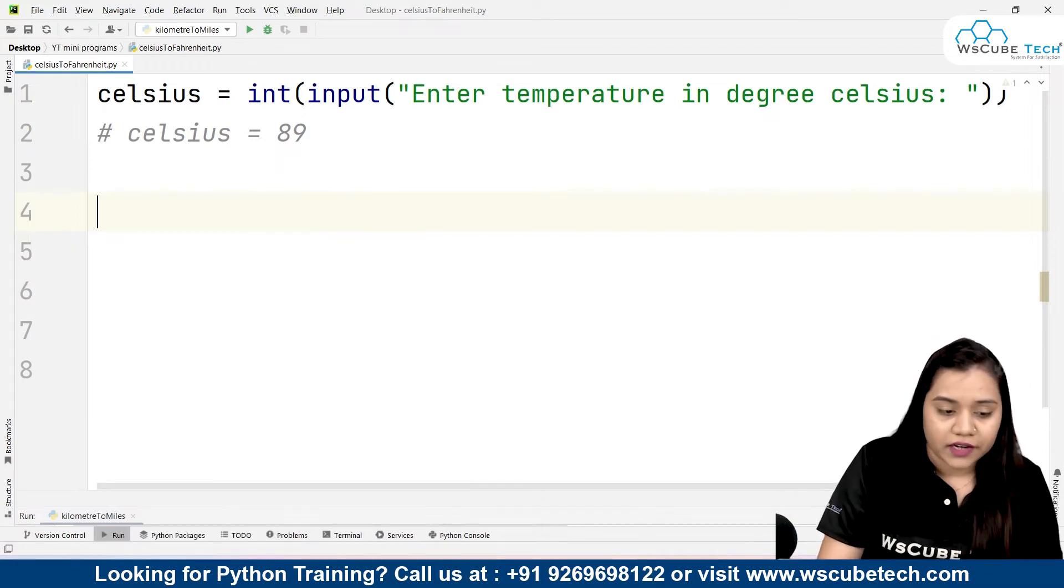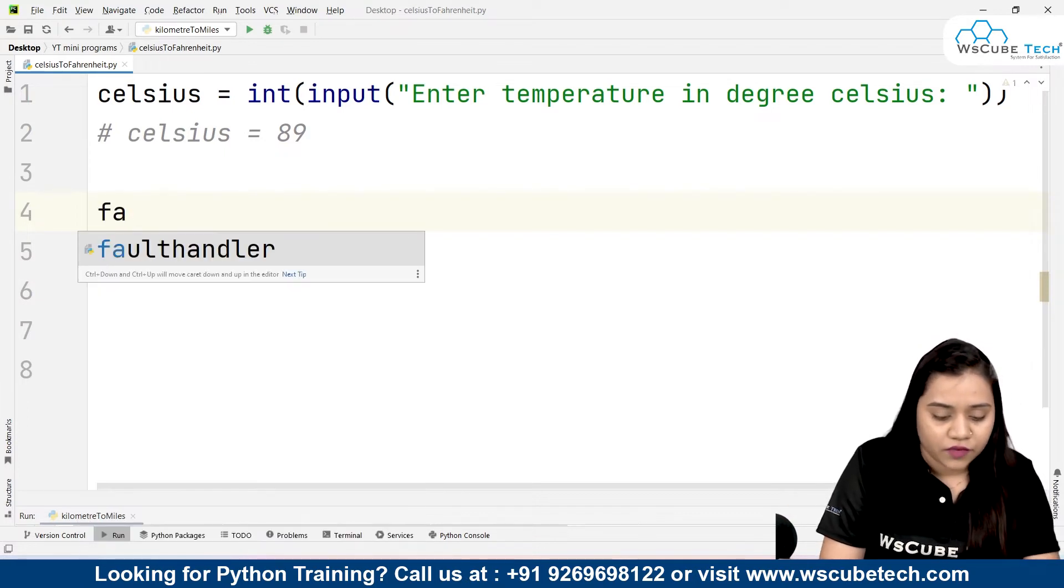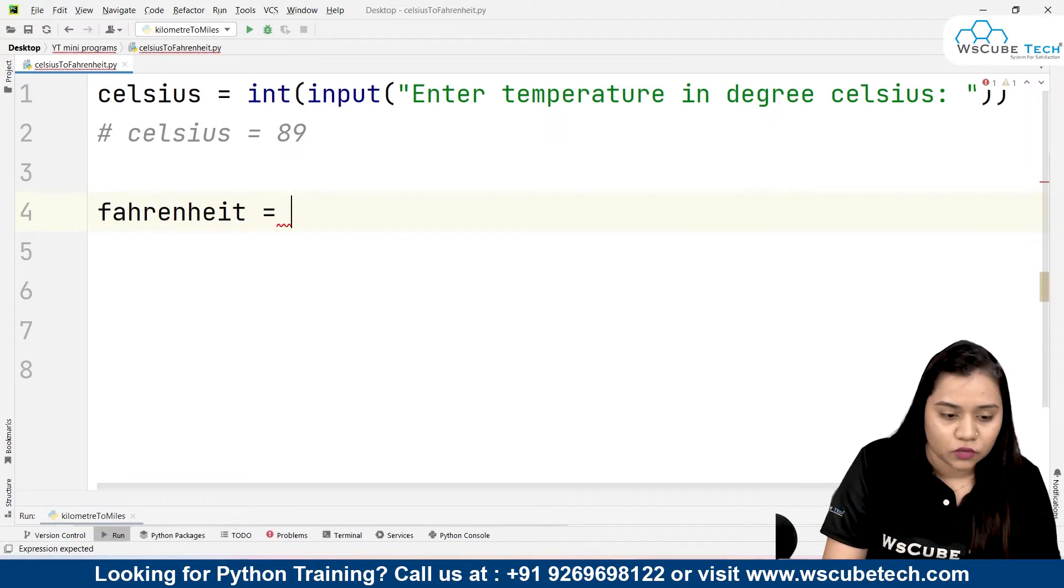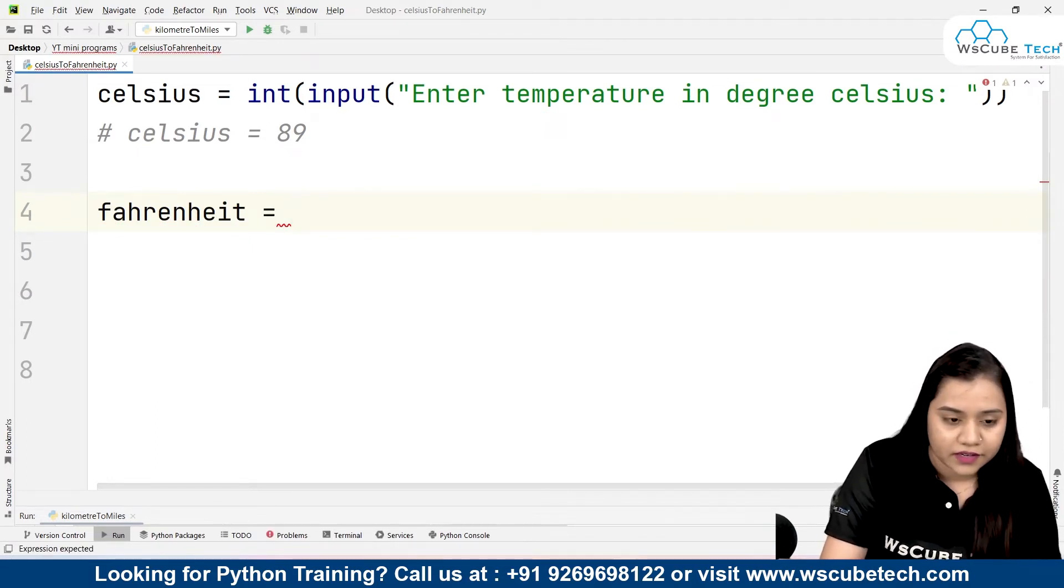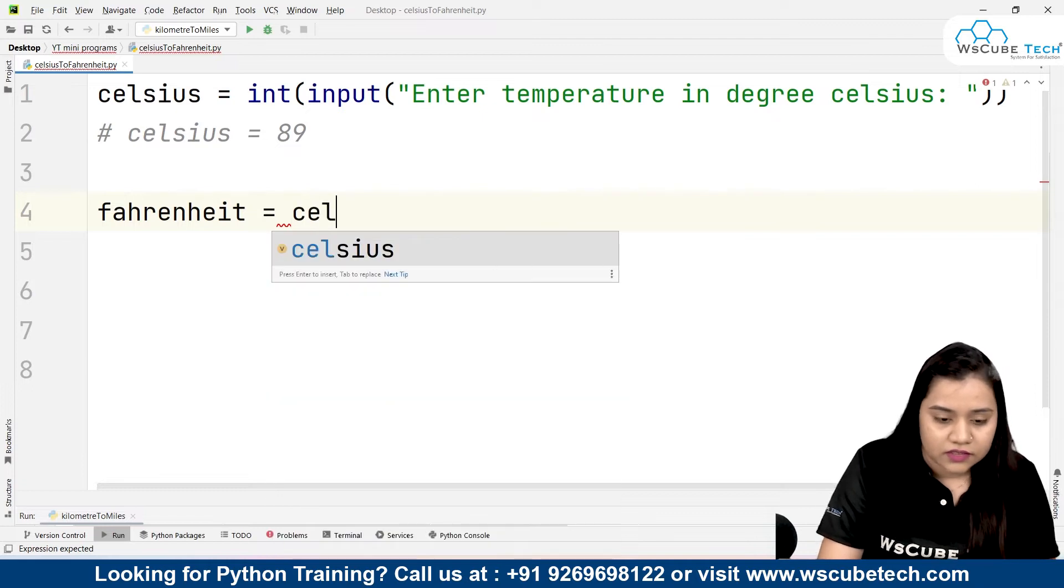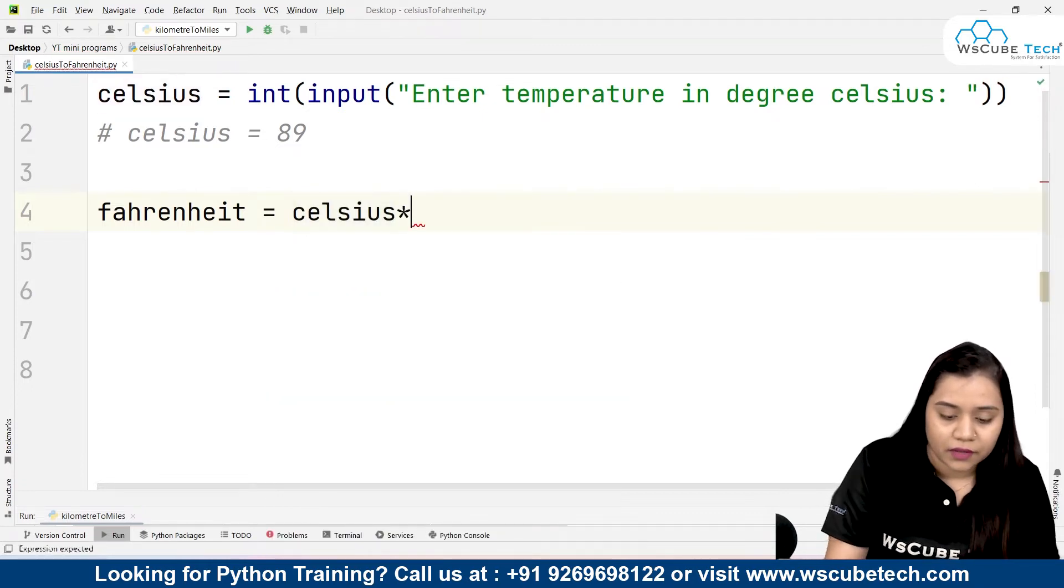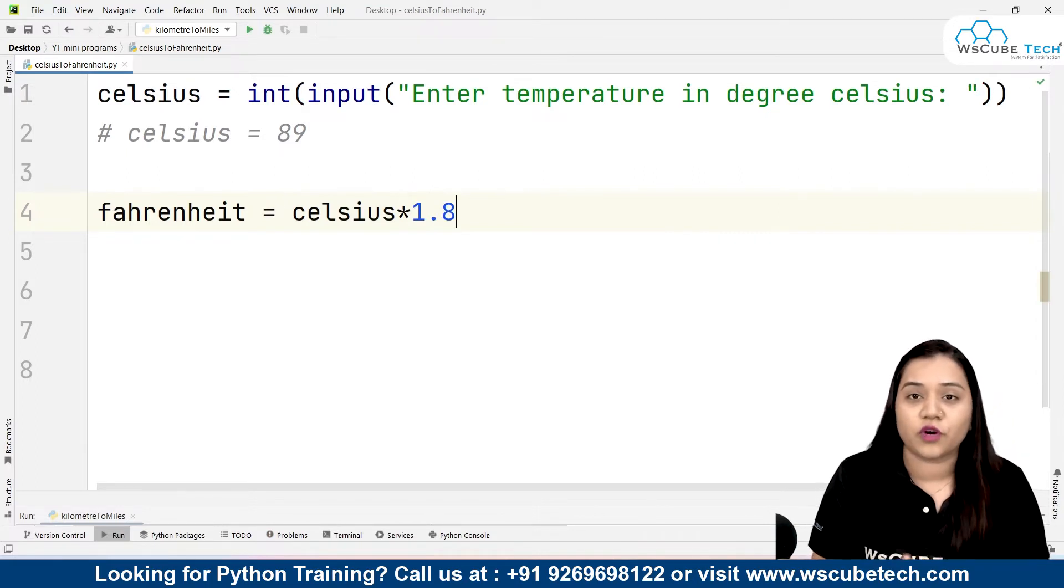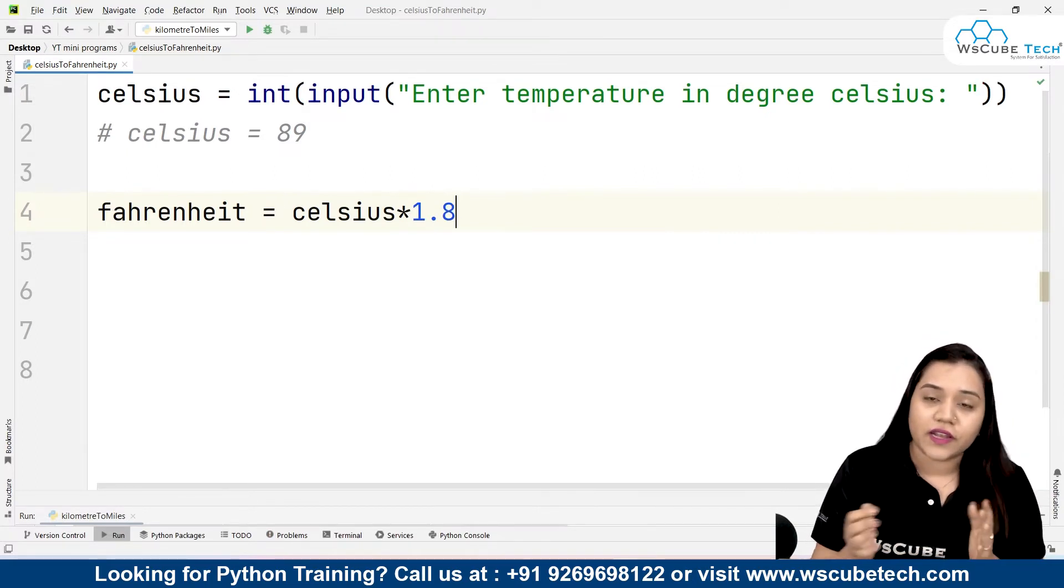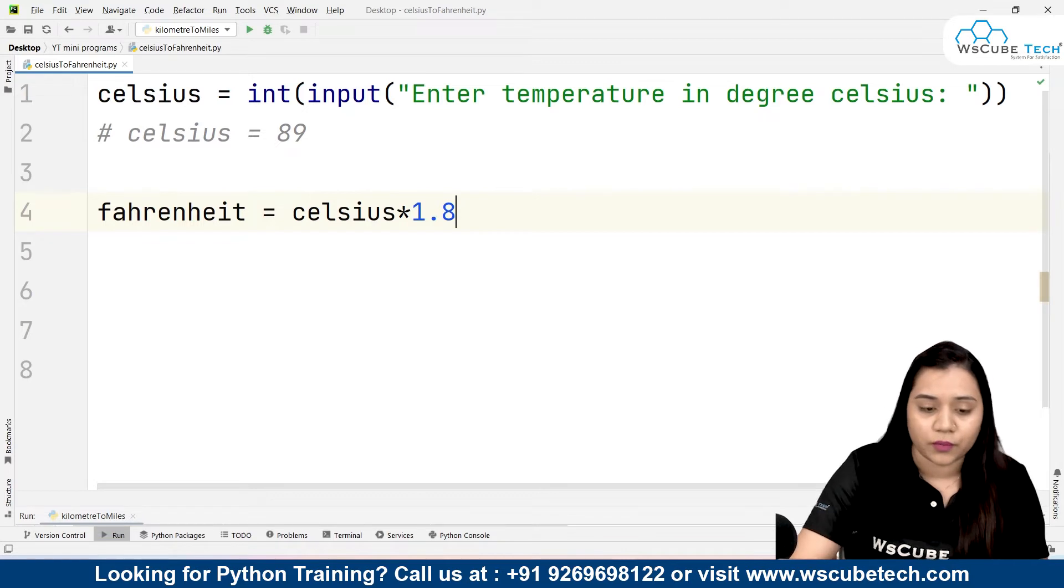Now to convert it into Fahrenheit I will be creating a variable called Fahrenheit. Fahrenheit equals, inside the Fahrenheit we need to put our formula, that is our degree Celsius, that is Celsius multiply by 1.8. Okay now where is this 1.8 coming from. I told you that it was 9 by 5, so 9 by 5 can also be written as 1.8.